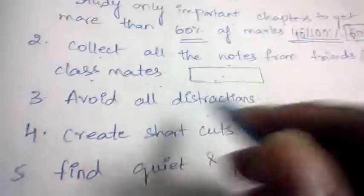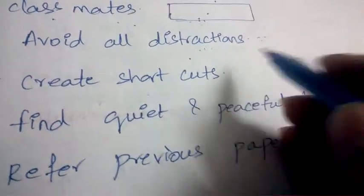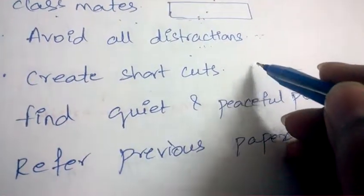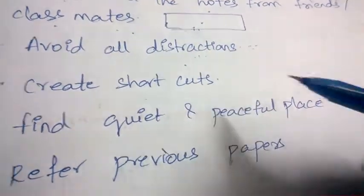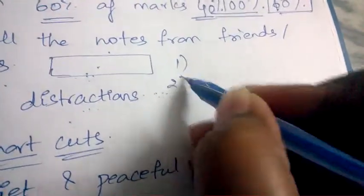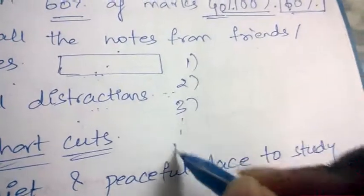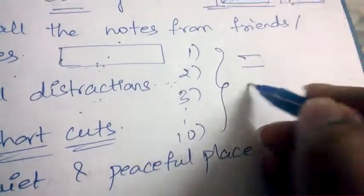Next tip is create shortcuts. Coming to a few important answers or coming to mathematics, chemistry, physics, this kind of subjects, there will be shortcuts. Like if you have 10 points, 10 side headings, instead of remembering all the 10 side headings, just remember one word from each side heading.